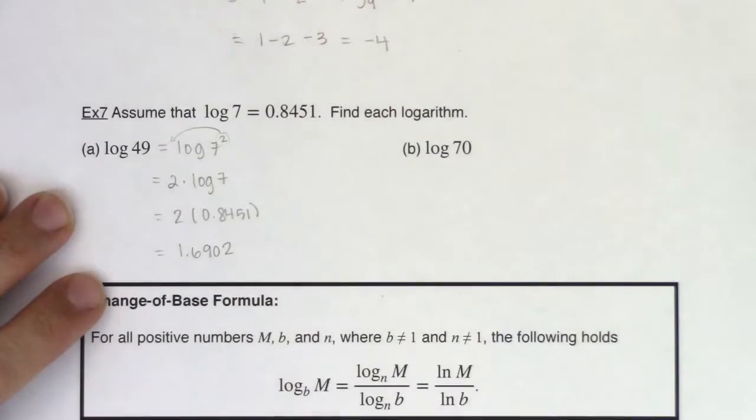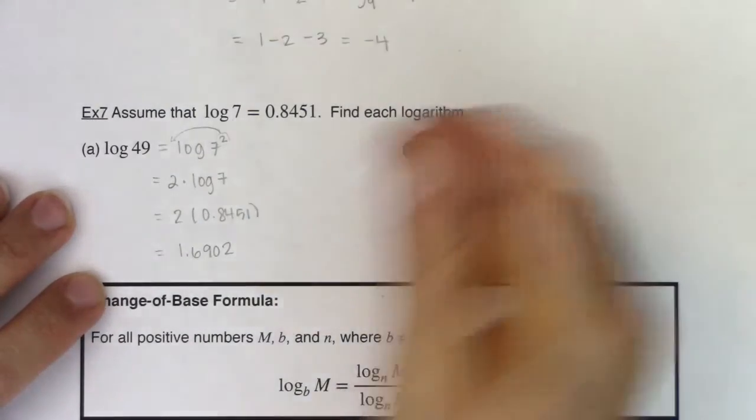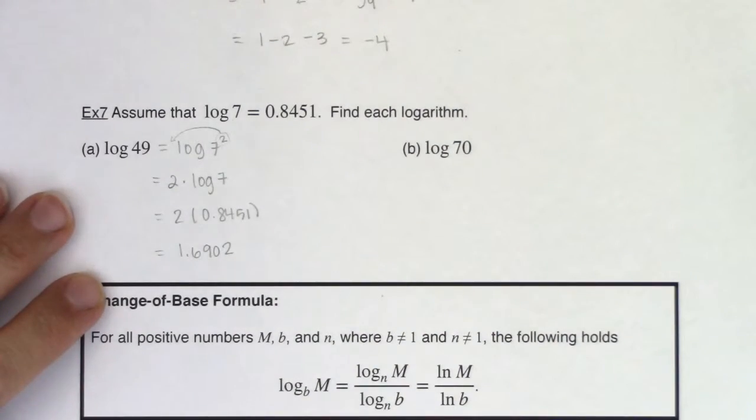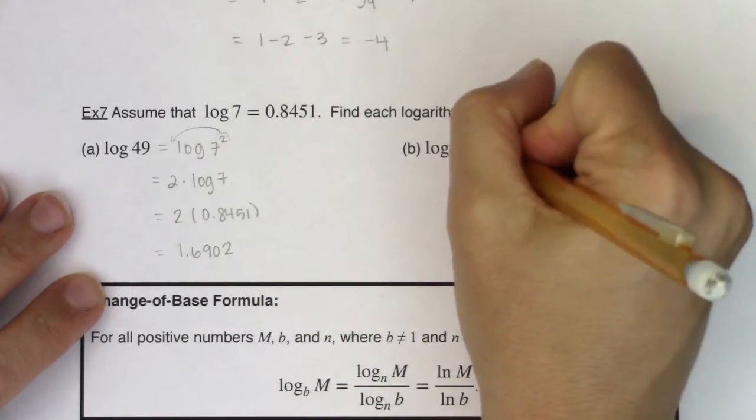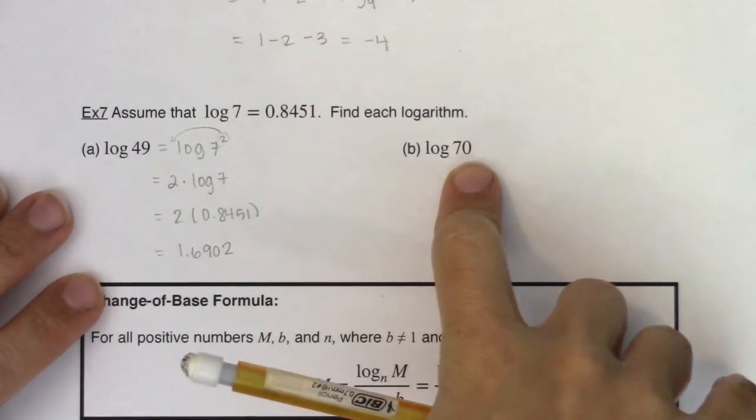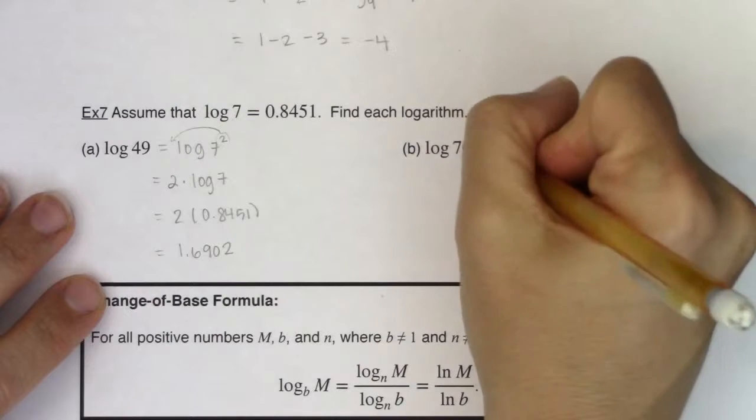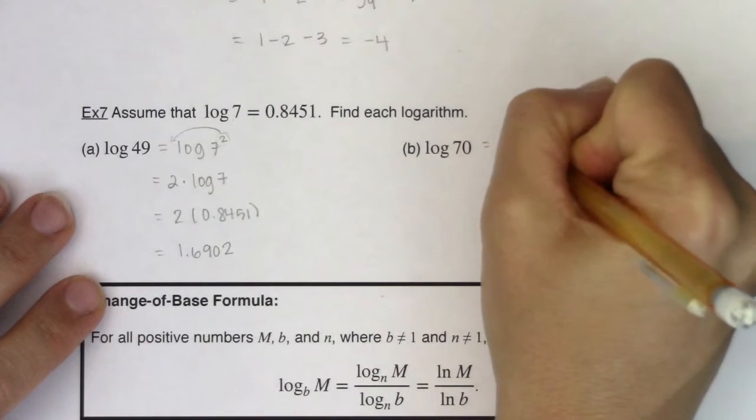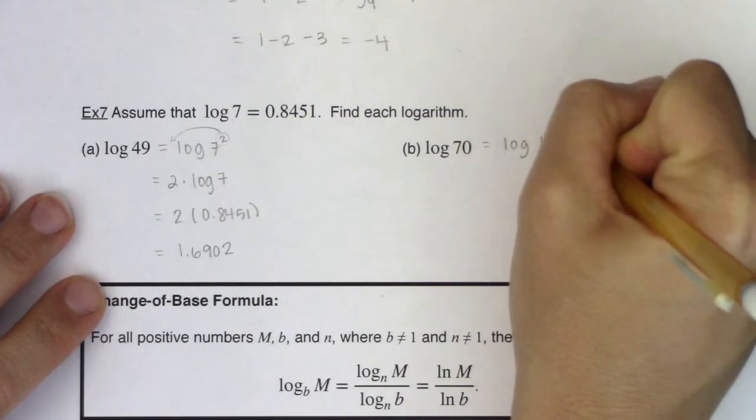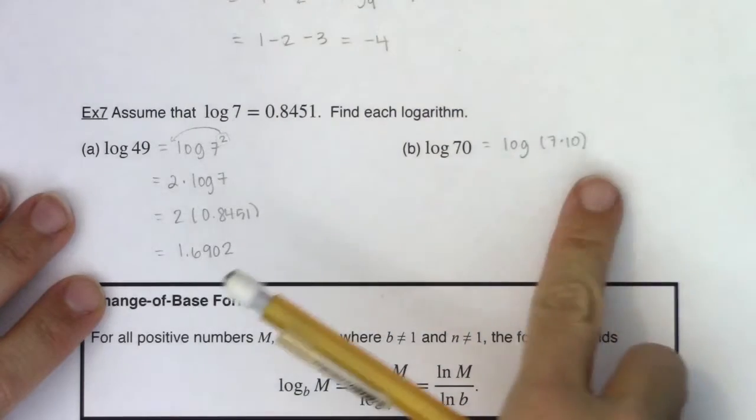Alright, so let's try this one and see if we can figure this out again. I want to do this without using my log button on my calculator. So I've got 70 here. How does that relate to 7? Well, maybe you're thinking, 70 is 7 times 10, and I do have a product property.